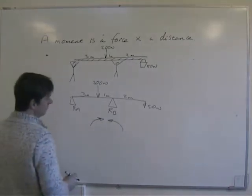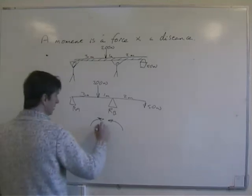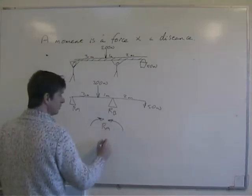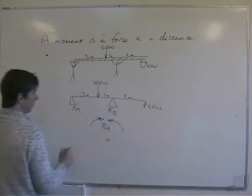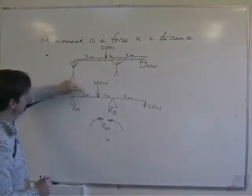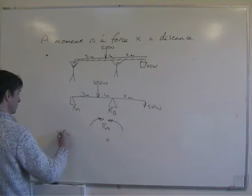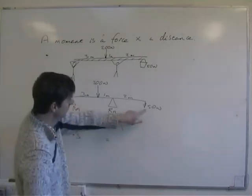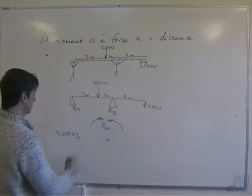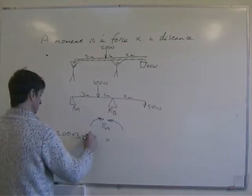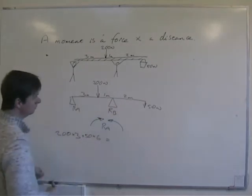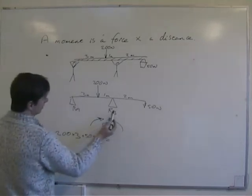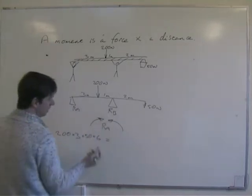If we start off and take moments about RA, clockwise moments about RA equals the anti-clockwise moments. So we've got 200 times 3, that's the clockwise moment, 50 times 2, 3, 6, that will equal the anti-clockwise moments, that are only this one, and it's RB, and the distance is 4.